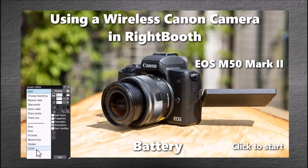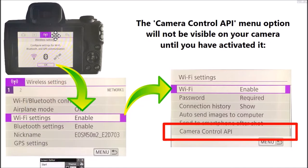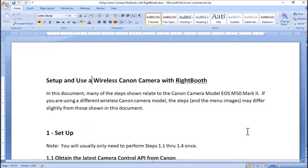The first thing to say is that you need to activate the Camera Control API on your camera. For reasons unknown, Canon have decided that when they sell their cameras, the Camera Control API is not available — it's not visible on your menu system. When you turn on your camera, go to wireless settings, look in the Wi-Fi settings — this Camera Control API option will not be listed unless you activate it. I'm going to refer back to the documentation you can download as a PDF off the Right Booth website.